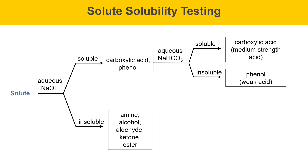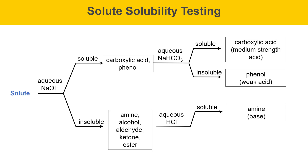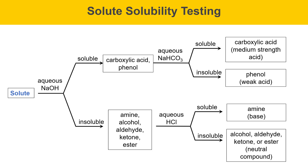It means you have a functional group that doesn't have an acidic proton. The next thing to do is to test the solubility of your solute in aqueous HCl. This is a strong acid. If it's soluble in the strong acid, it means you have a basic functional group present — that would be an amine, a base that gets protonated by the acid. If it's insoluble in aqueous HCl, it means you have a neutral compound, which could be an alcohol, an aldehyde, a ketone, or an ester. On the subsequent slides, I'll explain why the different functional groups dissolve the way that they do.